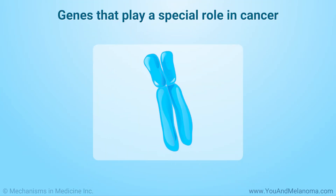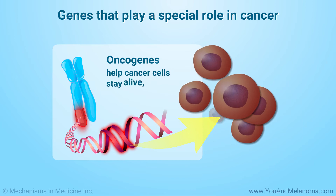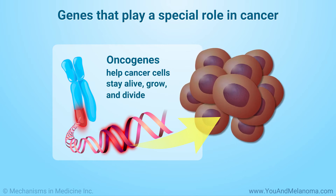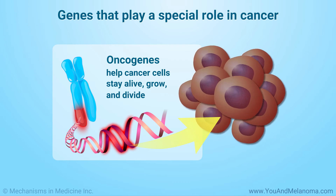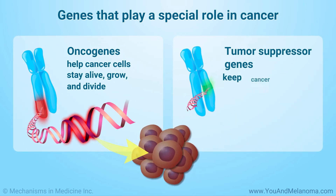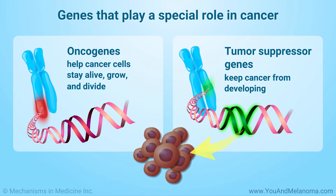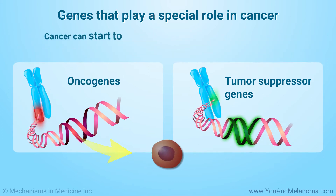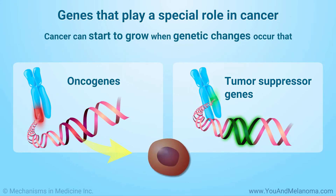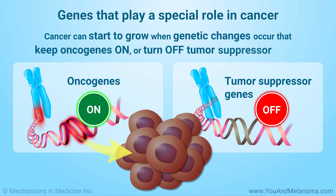Some genes play a special role in cancer. Oncogenes promote cancer by helping cells stay alive, grow, and divide, and are often found at abnormally high levels in tumor cells. Tumor suppressor genes keep cancer from developing by controlling cell growth, helping the body get rid of abnormal cells, and fixing mistakes in DNA. Cancer can start to grow when genetic changes occur that keep oncogenes turned on or turn off tumor suppressor genes.